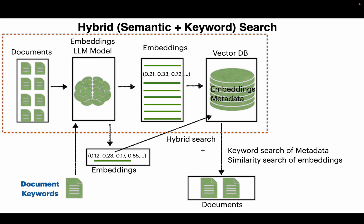When we do the search, it is performed in two steps. Pinecone first searches for the keywords we provided in the metadata. After filtering the documents, it then does the similarity search on the remaining embeddings. That way, the search is also faster, because keyword search is much faster than semantic search.